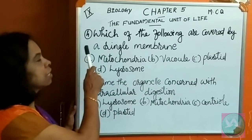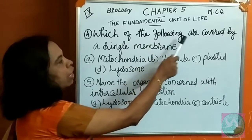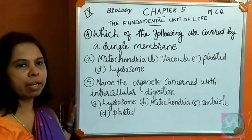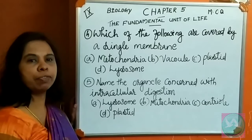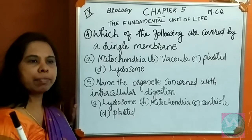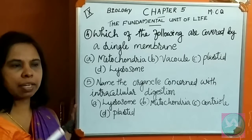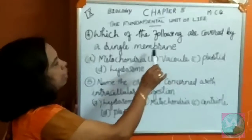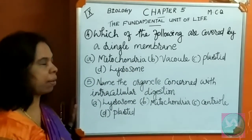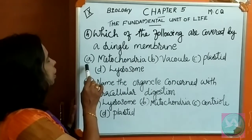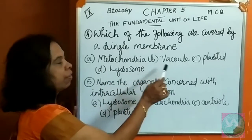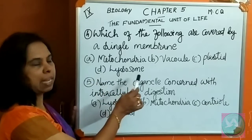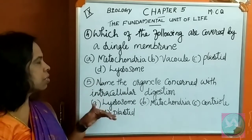Next question: which of the following are covered by a single membrane? You studied that few organelles are covered with a double membrane and a few organelles are covered with a single membrane — so just guess which organelles are covered with a single membrane. Options: A. Mitochondria, B. Vacuole, C. Plastid, D. Lysosome.